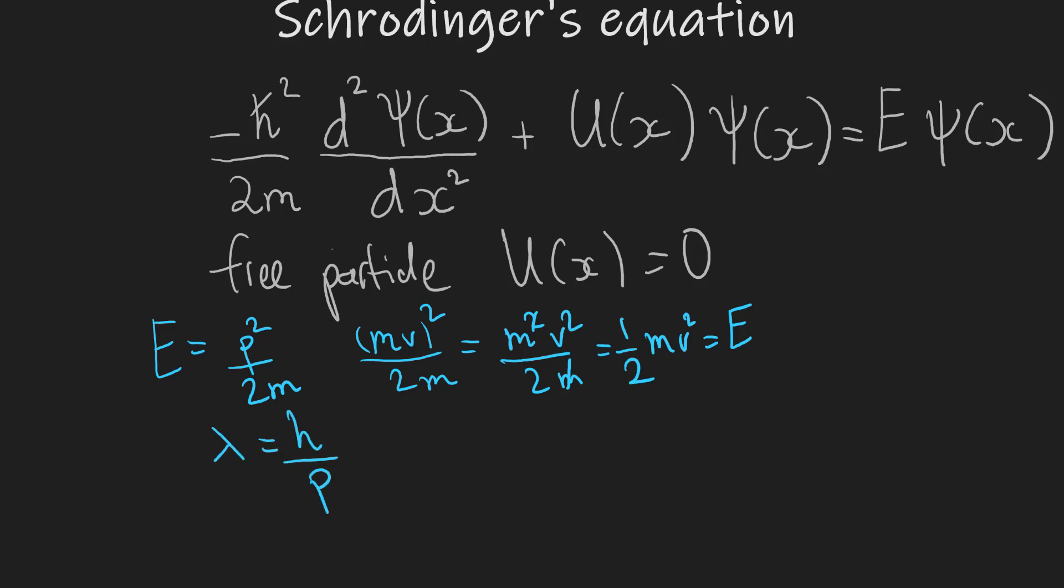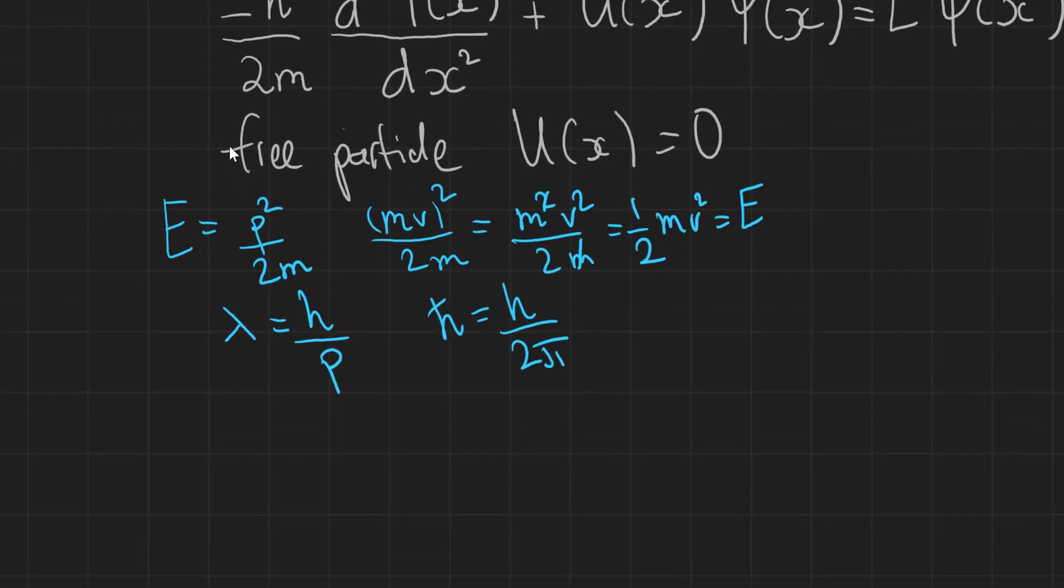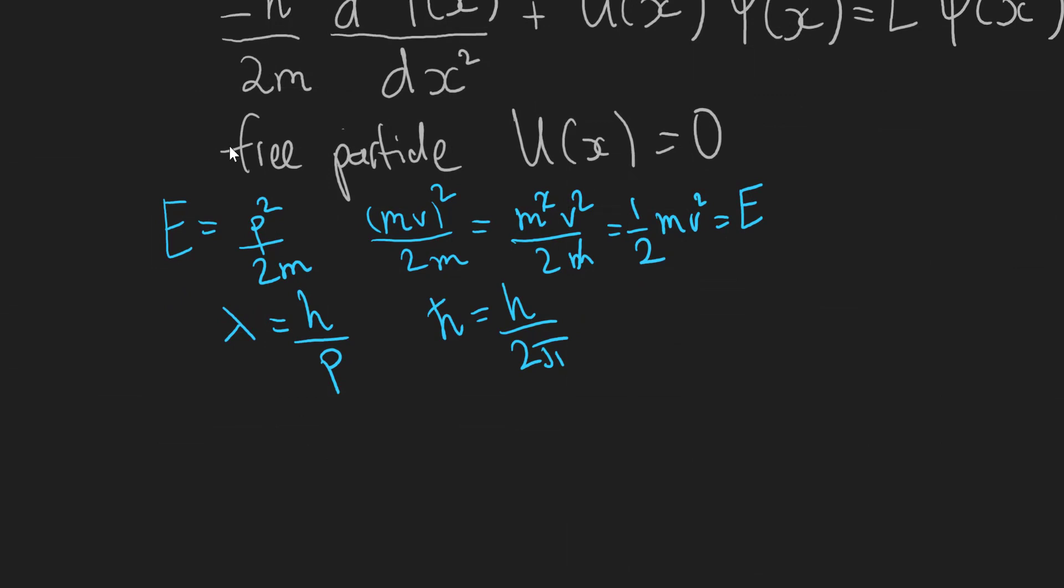The next relationship that I would like to remind you is that the wavelength is equal to Planck's constant h divided by p. Now in quantum mechanics we often use h bar. As you can see we have this constant h bar over here in Schrödinger's equation and this is simply defined as Planck's constant divided by 2π.